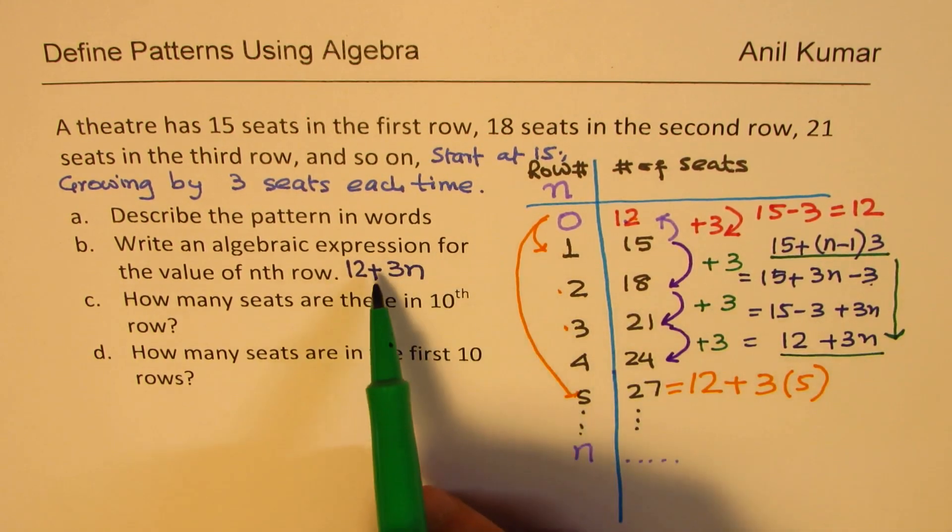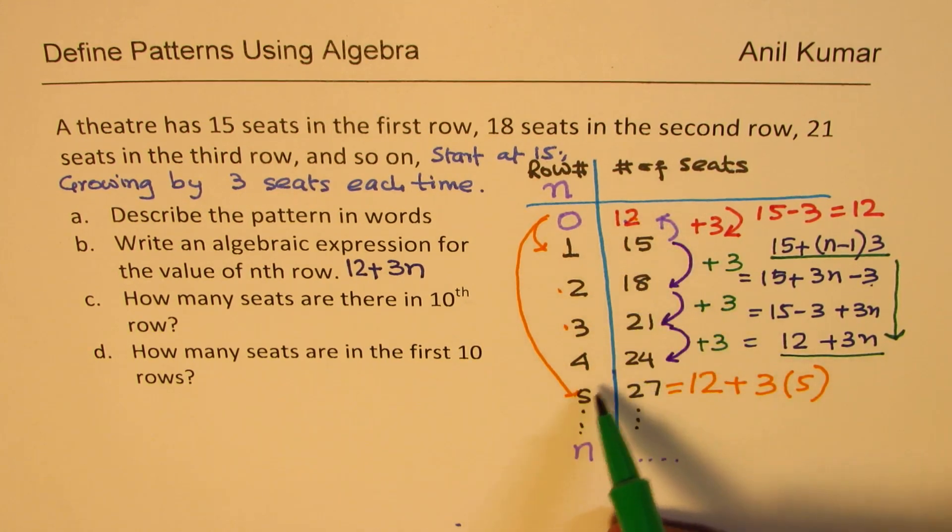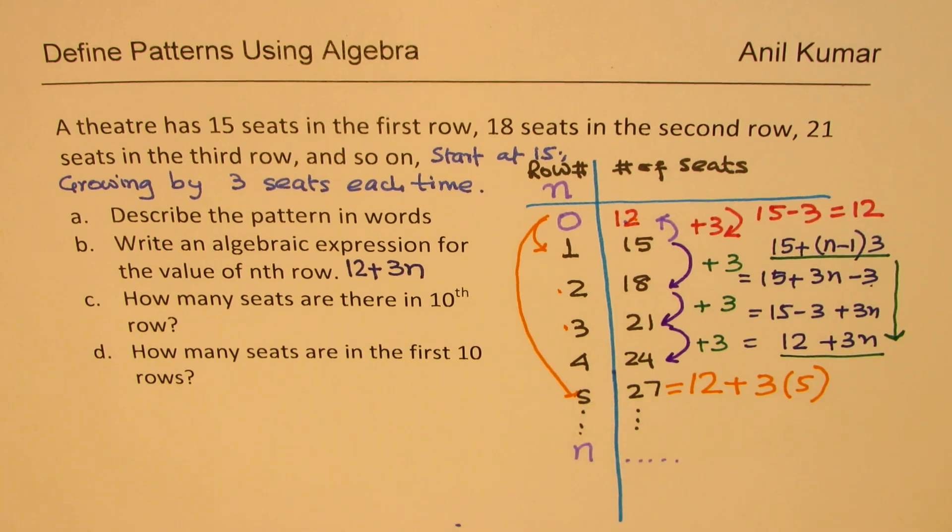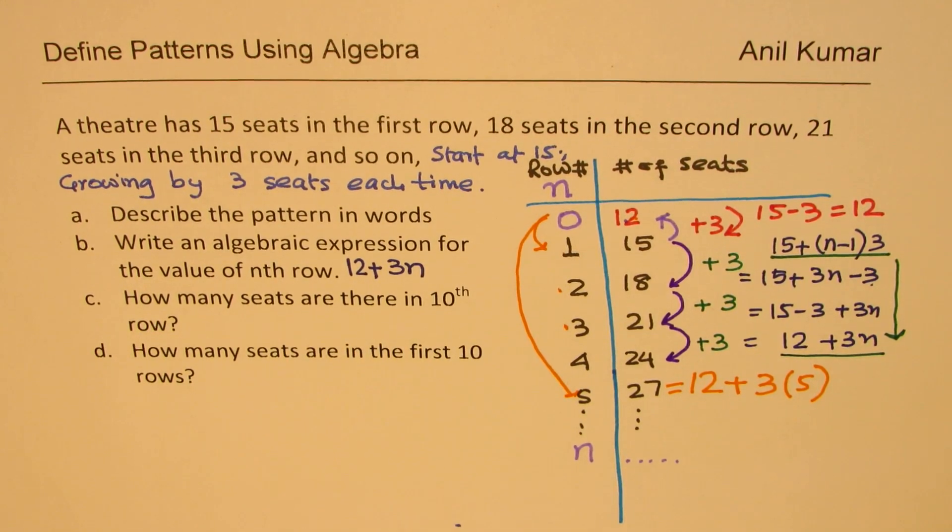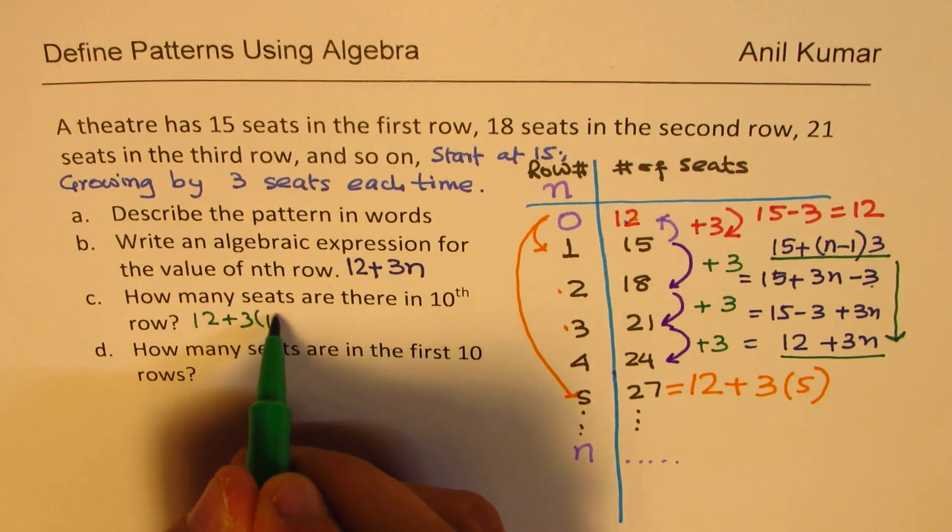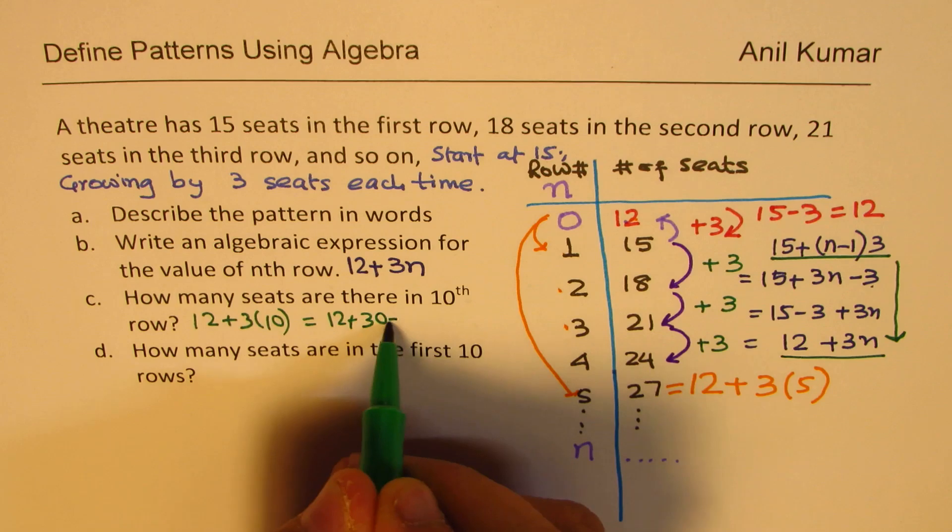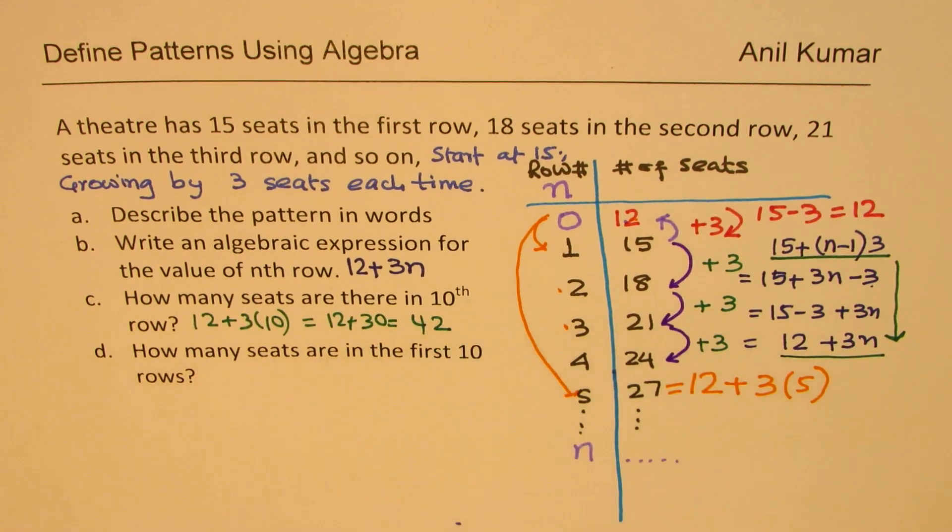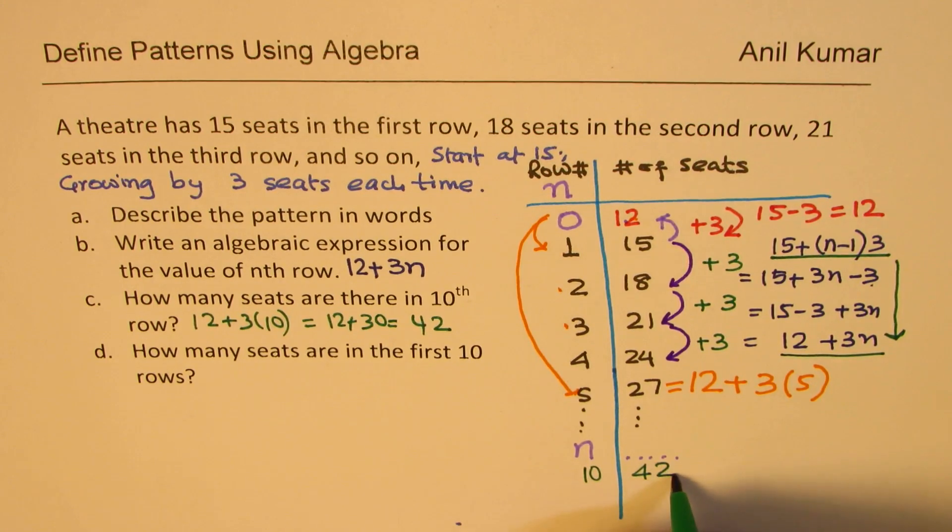So we get our answer, 12 plus 3n. Either way you do, both ways, you get the same answer. You start from here. You will end up here only. Or you can straight away go one step back. You know 12. And now, how many 3s should be added? Same times the number of row. 3 times the number of row. Part C. How many seats are there in the 10th row? So we'll just put 10 here. So like 12 plus 3 times 10. So that is 12 plus 30, which gives us 42. So there are going to be, in 10th row, 42 seats.